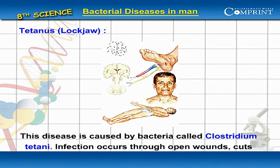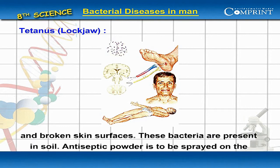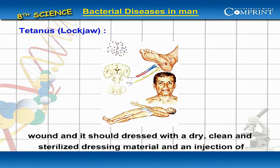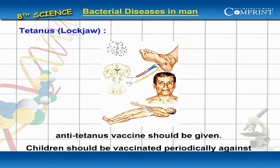Tetanus. This disease is caused by bacteria called Clostridium tetani. Infection occurs through open wounds, cuts and broken skin surfaces. These bacteria are present in soil. Antiseptic powder is to be sprayed on the wound and it should be dressed well with a dry, clean and sterilized dressing material, and an injection of anti-tetanus vaccine should be given.